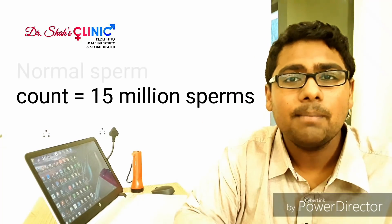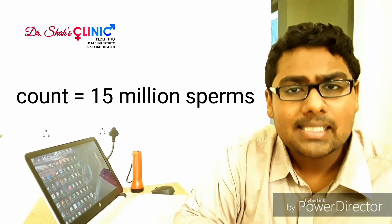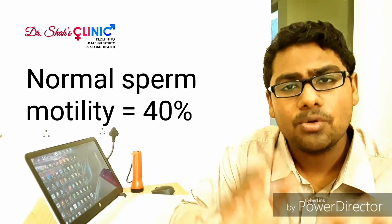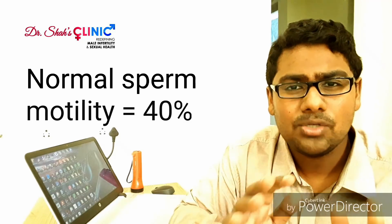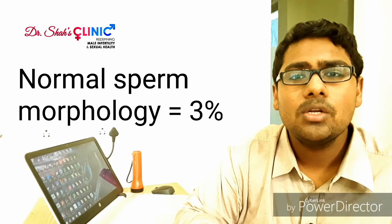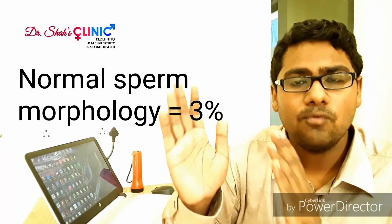The normal sperm count in a semen analysis report, as per the WHO 2010 andrology laboratory guideline values, should be approximately 15 million per ml. The normal sperm motility should be somewhere between 32 to 40 percent, and the normal sperm morphology as per the WHO 2010 values should be anywhere between 3 to 4 percent.